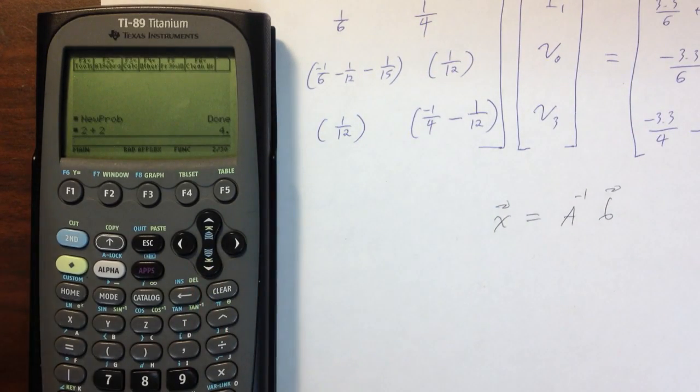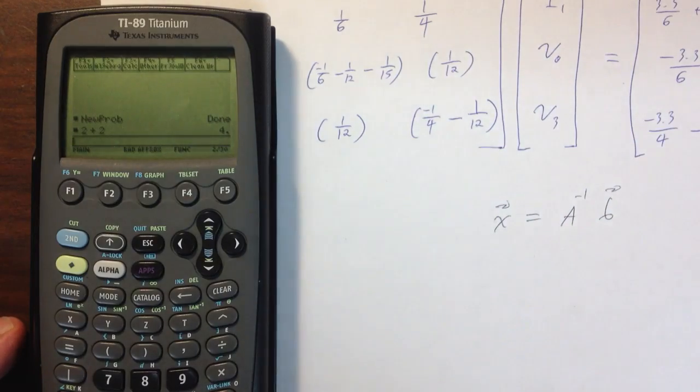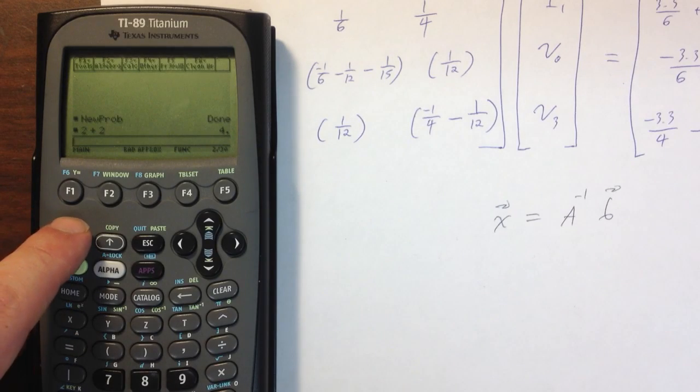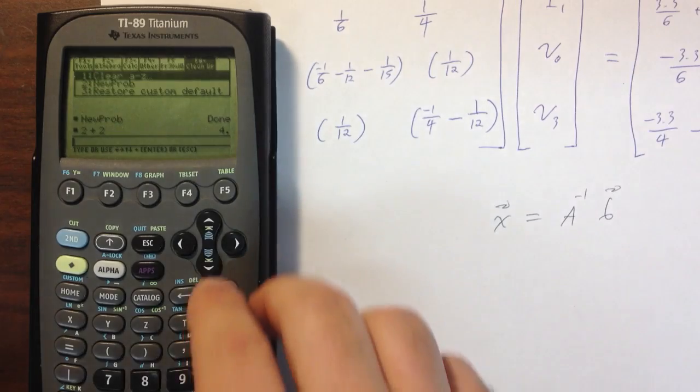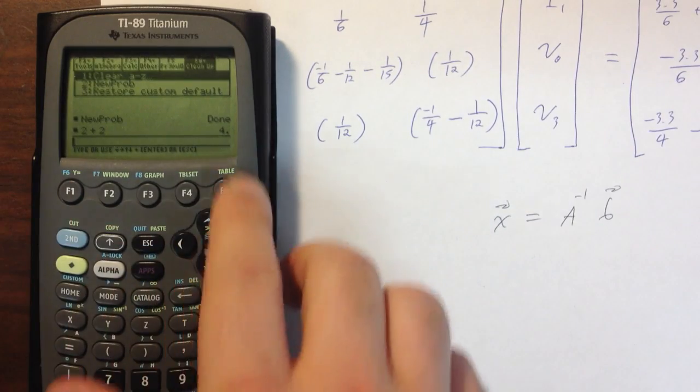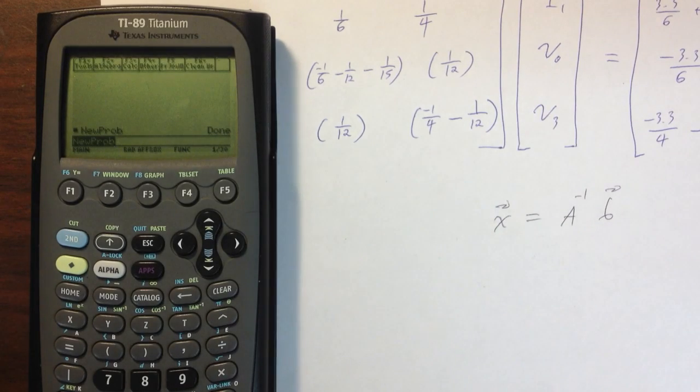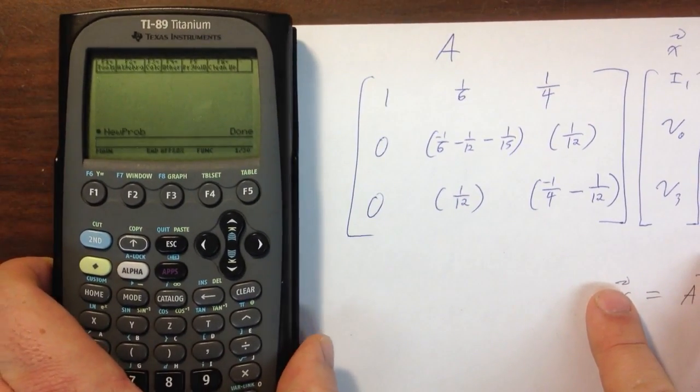The second thing that I always like to do before I start on a problem like this is I want to clear out all of my variables, because I'm going to put my A matrix and my B matrix into A and B variables. I'm going to push my second button, and then I'm going to push F1, which when I push second essentially gets me F6. This is the menu that pops up, and I'm going to select the second option, which is my new problem option. I hit Enter. Now it's cleared out all of the variables for me.